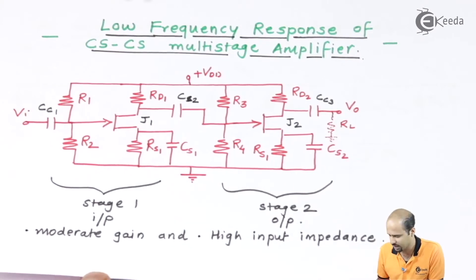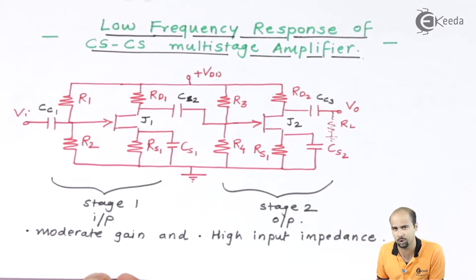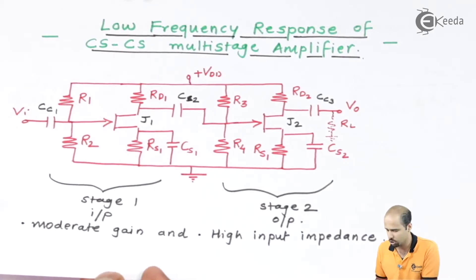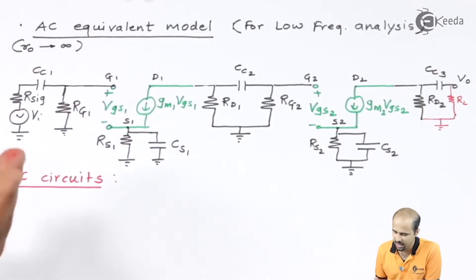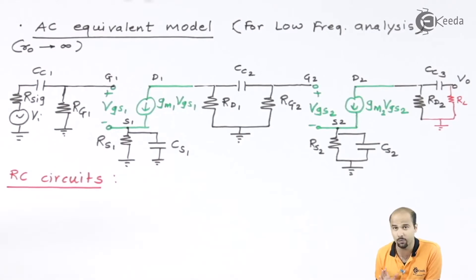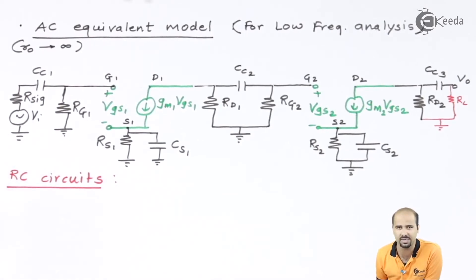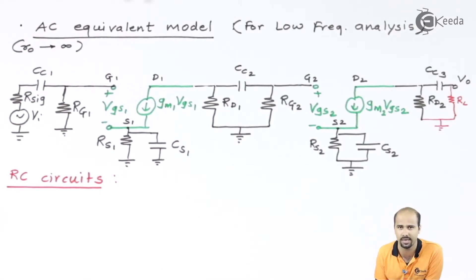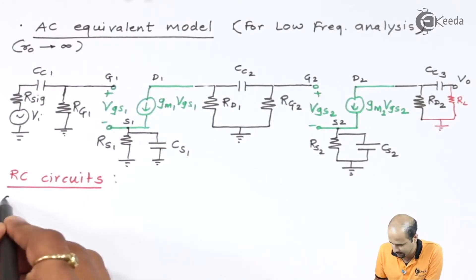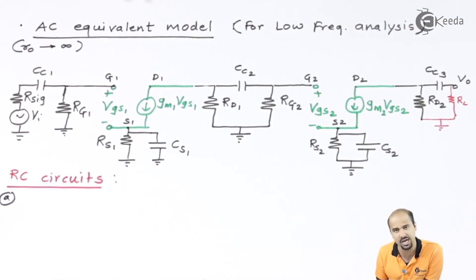We will convert this particular circuit into the AC equivalent model. For low frequency analysis, I have kept CC1, CC2, CC3, CS1, CS2 as they are — not yet shorted. Because of this, we will get a number of RC networks from which we will get the particular frequencies required at the lower side. Let us discuss how many RC circuits we will be getting.